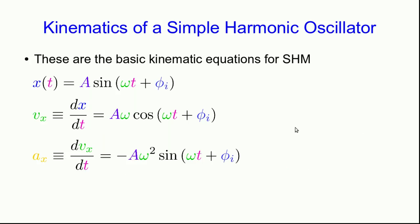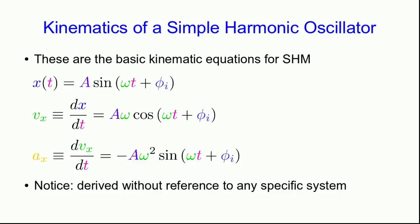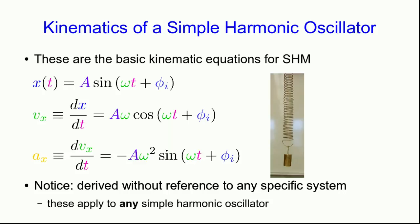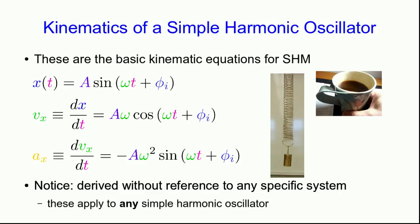Once you know position, velocity, and acceleration as functions of time, you can figure out pretty much everything else about a system. These were derived without reference to any specific oscillator system — simply using the fact that simple harmonic oscillators follow uniform circular motion. So these equations apply to any simple harmonic oscillator: a mass on a spring, oscillating coffee in a mug, a ball in a bowl, or two atoms in a molecule vibrating.